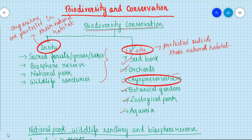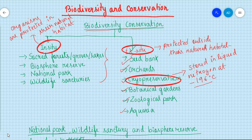In cryopreservation, seeds or pollen grains are normally stored in liquid nitrogen at minus 196 degrees centigrade. You have to remember this temperature — minus 196 degrees centigrade, stored in liquid nitrogen. This is what cryopreservation is.